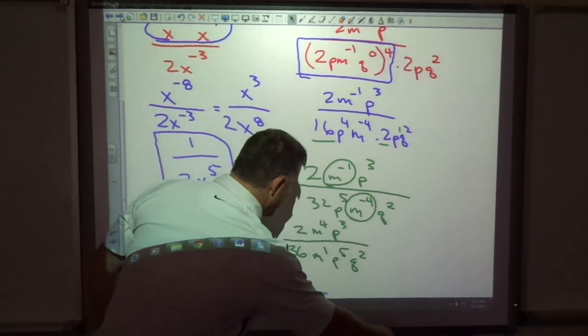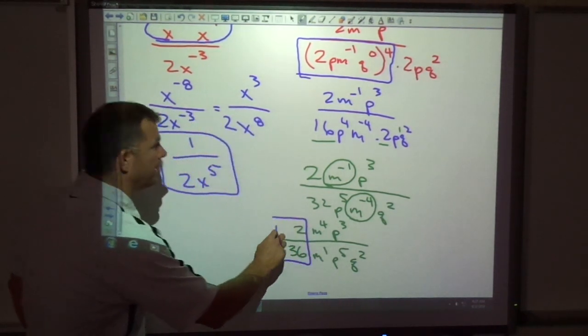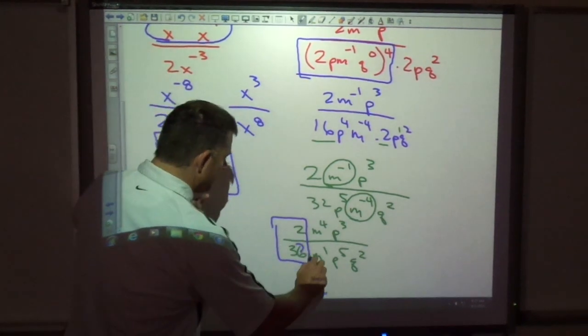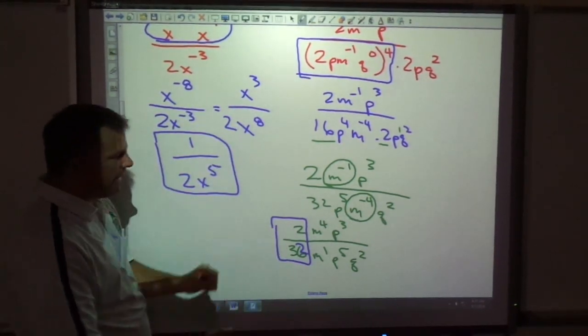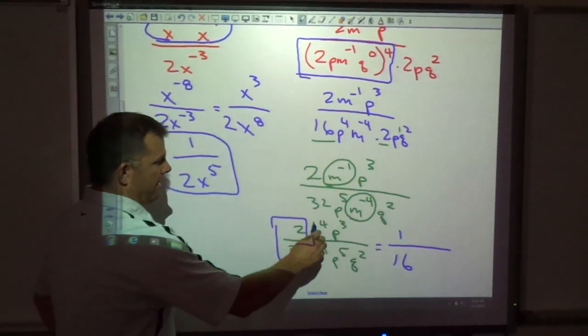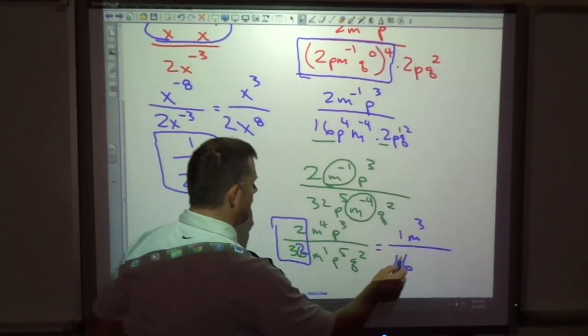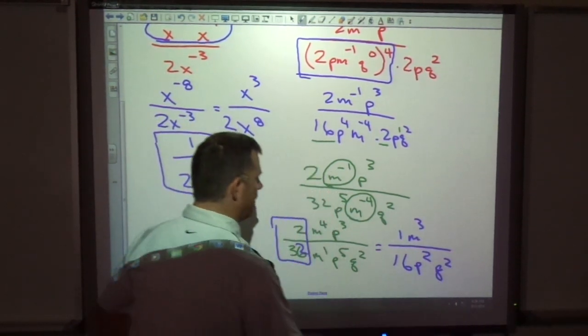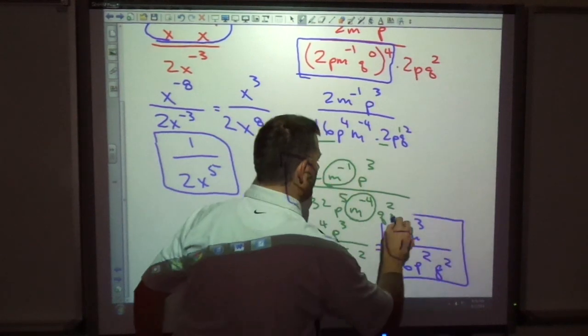Now I'm almost done. These are coefficients, so I can reduce. Oh, it's 32. So I'm almost finished here. 2 divided by 32 is 1 over 16. M to the 3rd, p squared, q squared. And there's my final answer.